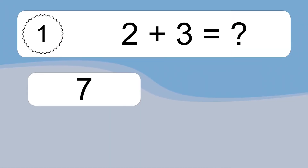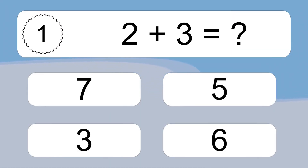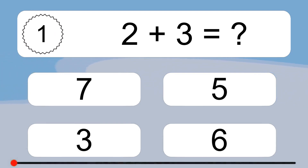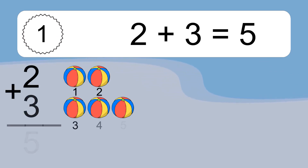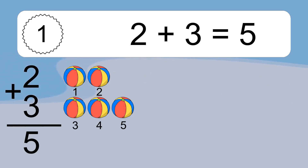2 plus 3 equals what? 2 plus 3 equals 5. Let's count it: 1, 2, 3, 4, 5.